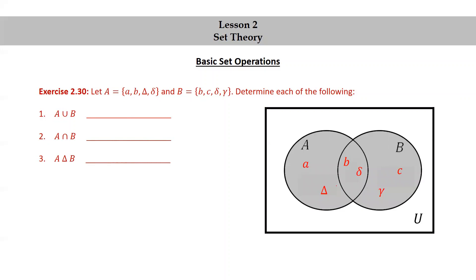Here's a Venn diagram illustrating this situation. Notice we have lowercase a and capital delta in capital A but not in capital B. We have lowercase b and lowercase delta common to both A and B. And we have lowercase c and gamma in capital B but not in capital A. So A union B is the set of {a, b, c, Δ, δ, γ}. The intersection of A and B is {b, δ}. And the symmetric difference between A and B is {a, Δ} union {c, γ}, which is {a, c, Δ, γ}.